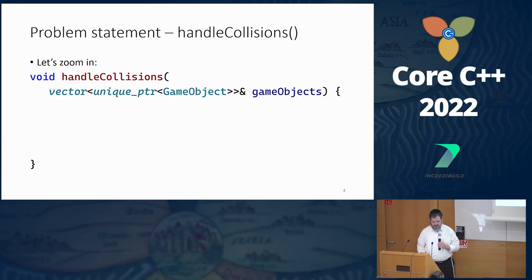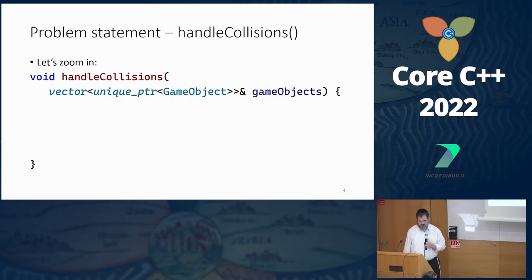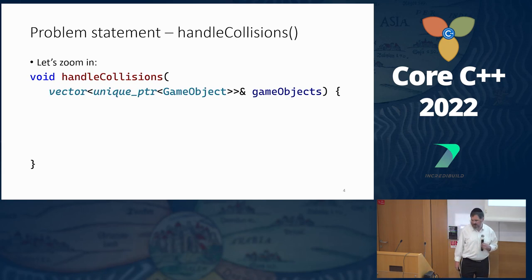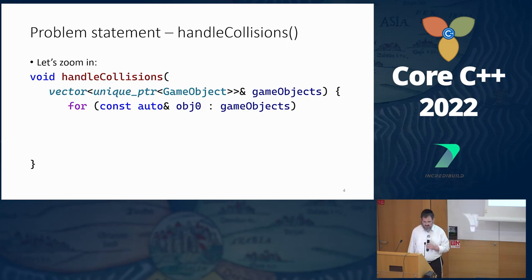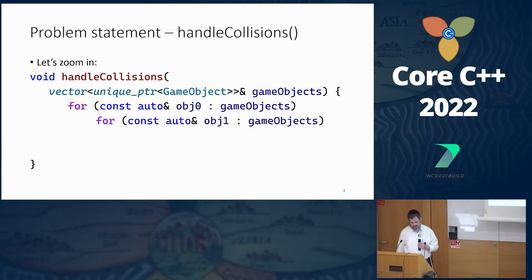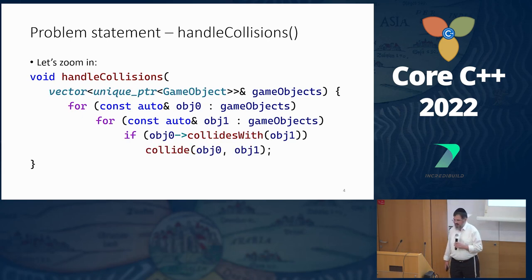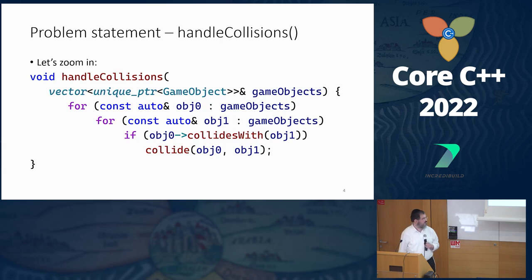It gets a vector of unique_ptr of game object, because as we said, we are about polymorphism here, so we use the base class and hold all the objects with a pointer to the base type. For simplicity, let's just go over all the pairs of objects with a nested loop, and for each one, if it collides with the other one, we have to process the collision and take the right action.